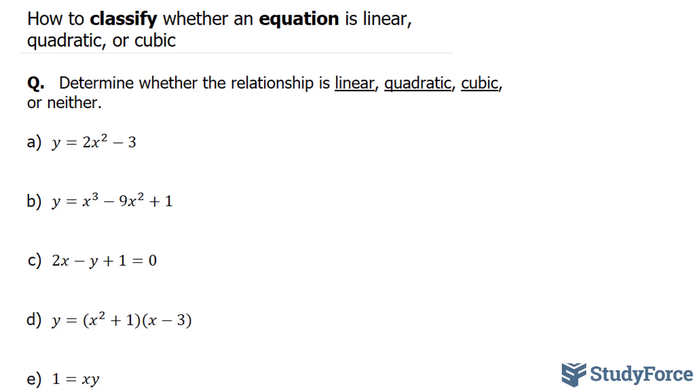Let's start with a. In part a, we have y is equal to 2x squared minus 3. Here, we have a quadratic relationship because of this x to the power of 2. Whenever you see x to the power of 2, then you know it's quadratic.